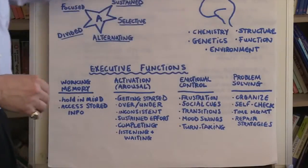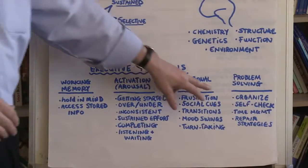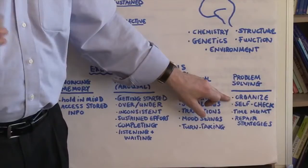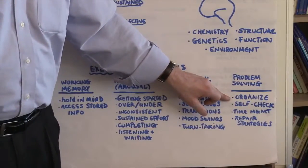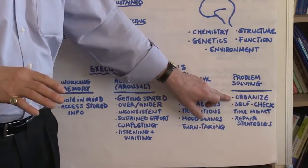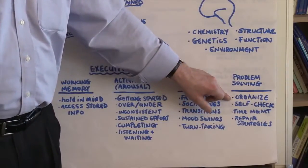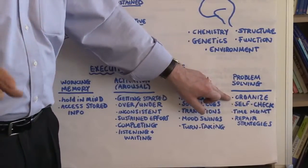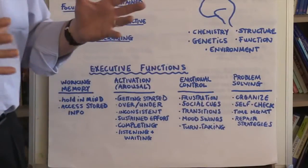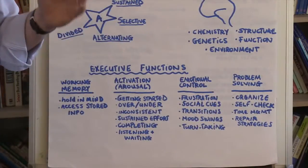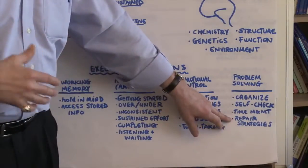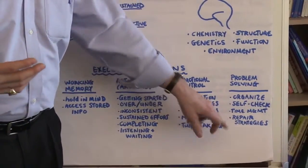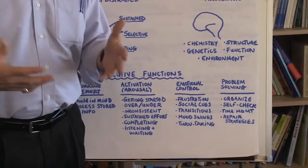In terms of problem-solving, individuals with ADHD have difficulty organizing themselves to solve problems. They're often overwhelmed by all of the detail that they need to consider, or they pick the wrong details, so it's difficult for them to organize around a task. They have difficulty self-checking or self-evaluating where they are. They don't often manage time well. And while they're problem-solving, they often have difficulty with repair strategies, knowing what to do when things seem not to be going right.